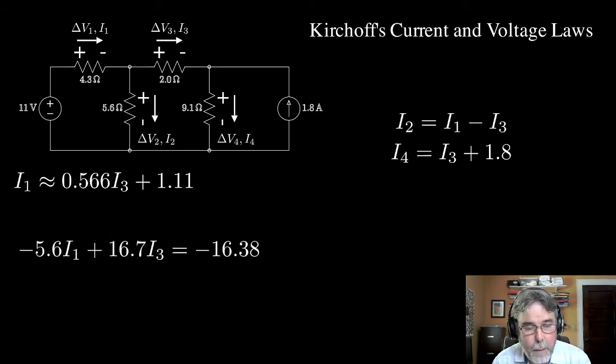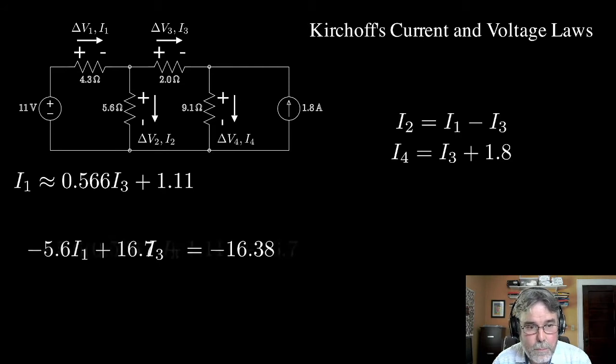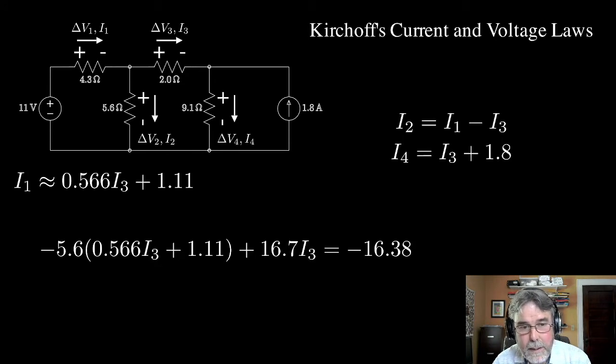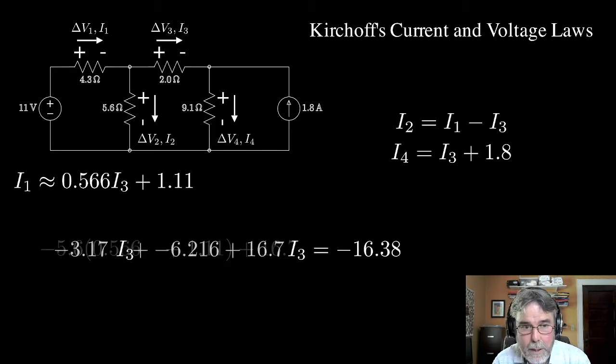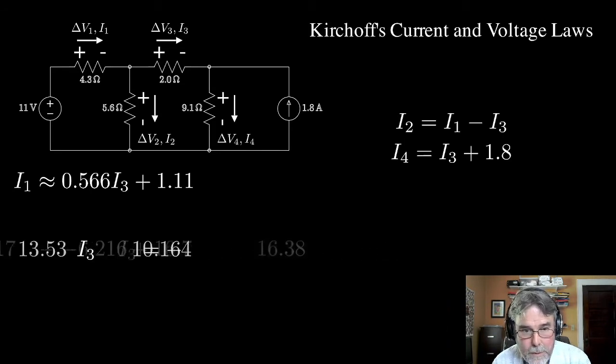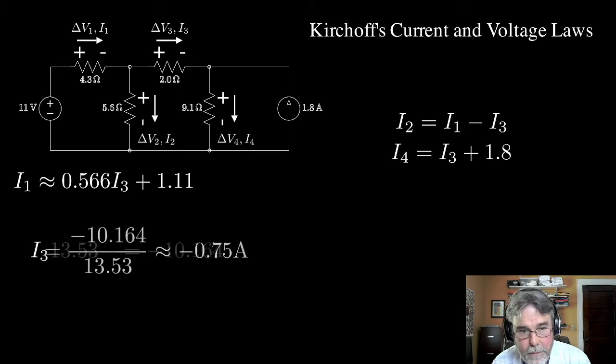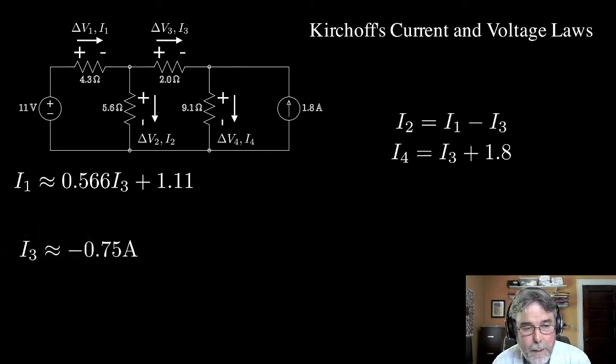So let's do the same thing with that next equation. I want to solve this now for I3. Well, let's just play with this for a little bit. Let's go ahead and put in what I1 is and then we'll solve for I3. So we'll combine terms, combine terms again, solve for I3, and we get minus 0.75 amps.